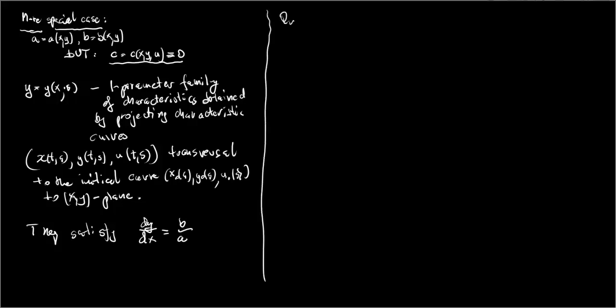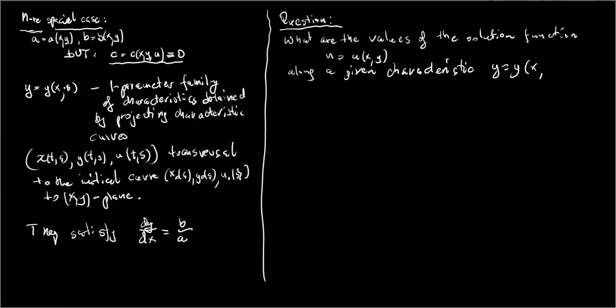As we know they satisfy the following ODE dy/dx equals B over A. Now we are interested in the following question: What are the values of the unknown function U of X,Y along a given characteristic? Inserting the dependence of Y on X into the unknown U, we want to know what is the behavior of the function U twiddle of X.